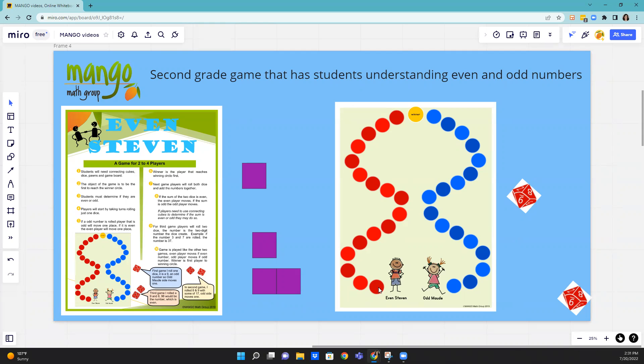If the number is even, the pawn moves along the board on the Even Steven side. If the number is odd, I'm going to make a little pawn here. The pawn will move on the other side.